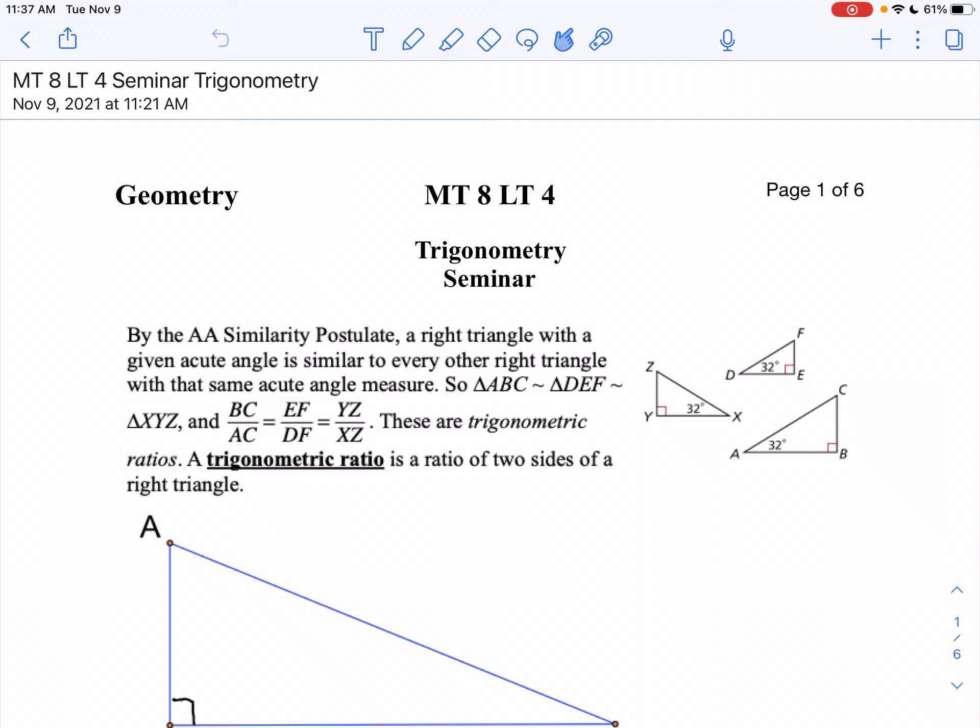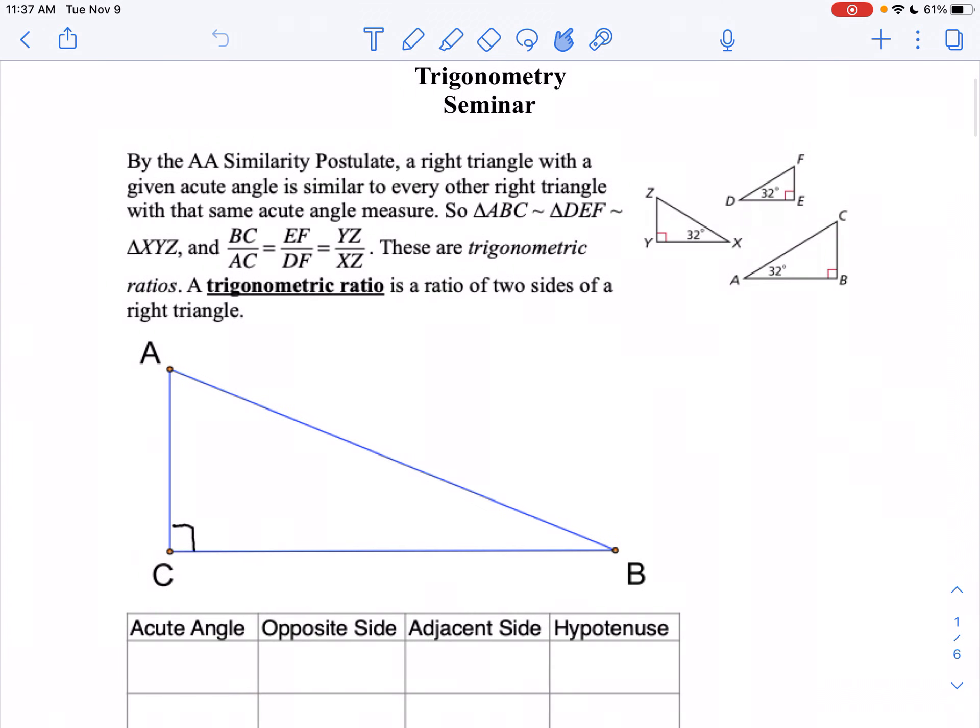Also, as a review all the way back from unit one, remember when you name a line, you can name a line using two capital letters. So I could call the hypotenuse of this line AB, or I could use a lowercase letter.